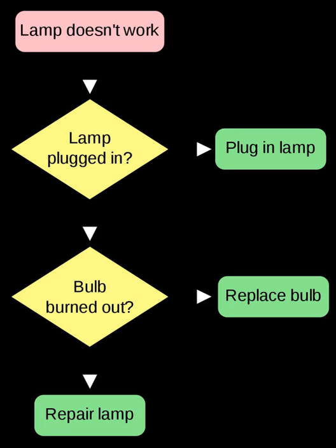Starvation freedom is a stronger guarantee than the absence of deadlock. A mutual exclusion algorithm that must choose to allow one of two processes into a critical section and picks one arbitrarily is deadlock-free, but not starvation-free. A possible solution to starvation is to use a scheduling algorithm with a priority queue that also uses the aging technique — a technique of gradually increasing the priority of processes that wait in the system for a long time.